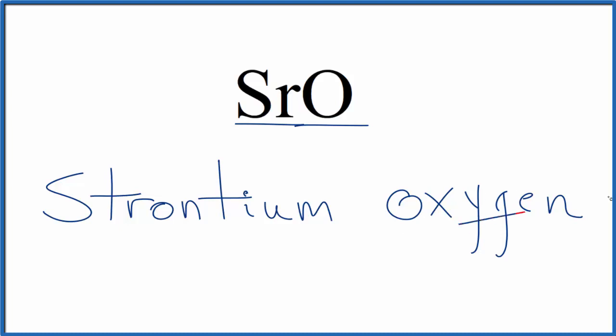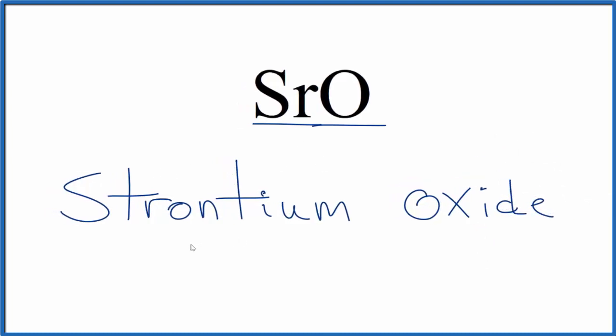We cross out the Y, G, E, N, and we write I, D, E. So the name for SrO is strontium oxide.